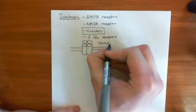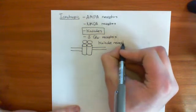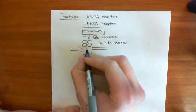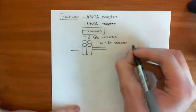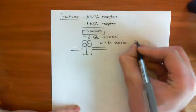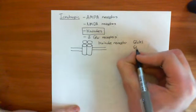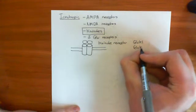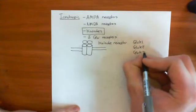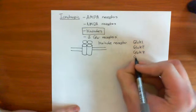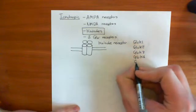There are five genes coding for kainate receptor subunits: the GluK1 gene, the GluK2 gene, GluK3, GluK4, and finally GluK5.